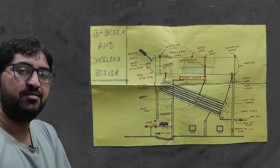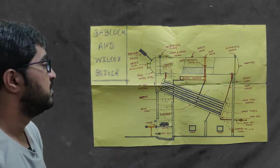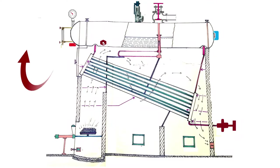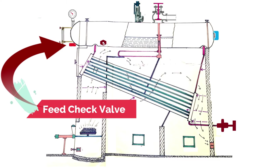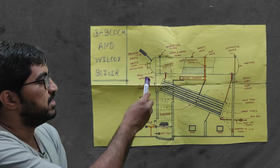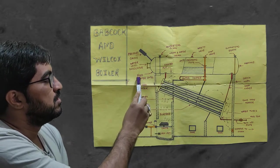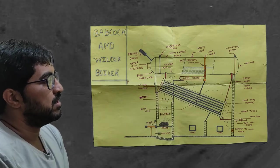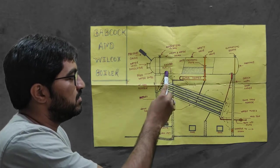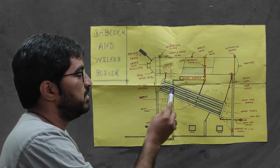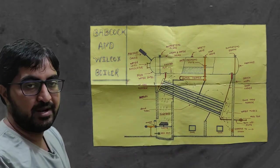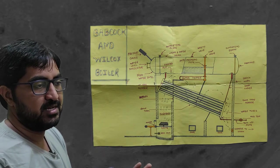Now we will discuss the working principle of the boiler. First, through the feed check valve — the function of the feed check valve is to feed water into the boiler. It is connected with the pump; generally we use a centrifugal type pump to provide higher discharge. We fill water into the shell, which is connected downward via short and long tubes to the uptake header and downtake header — this header is a distribution system similar to that used in solar water heaters.